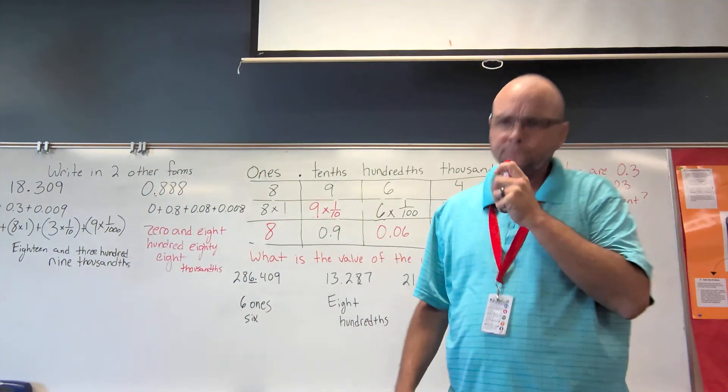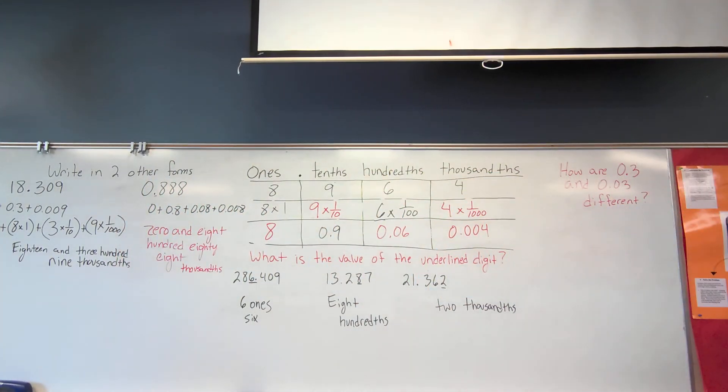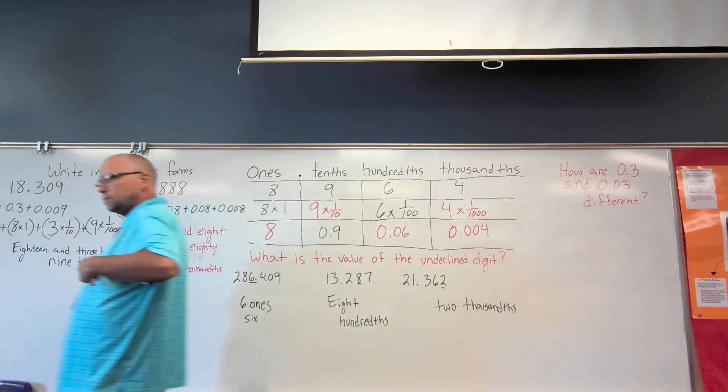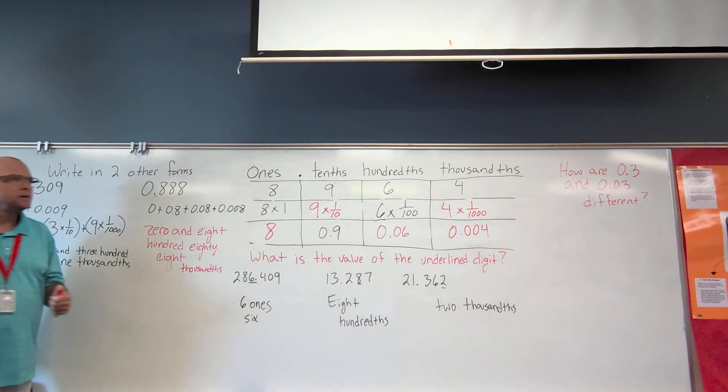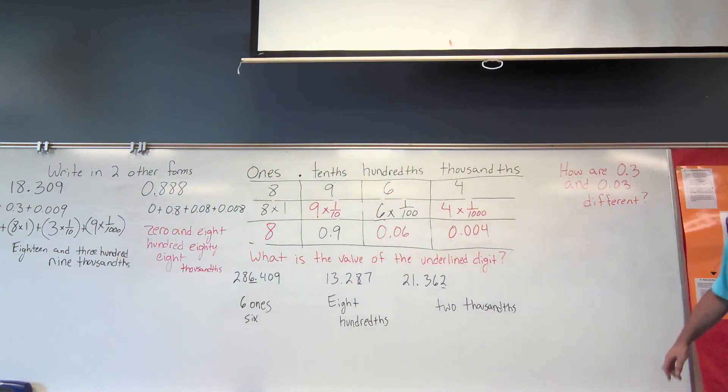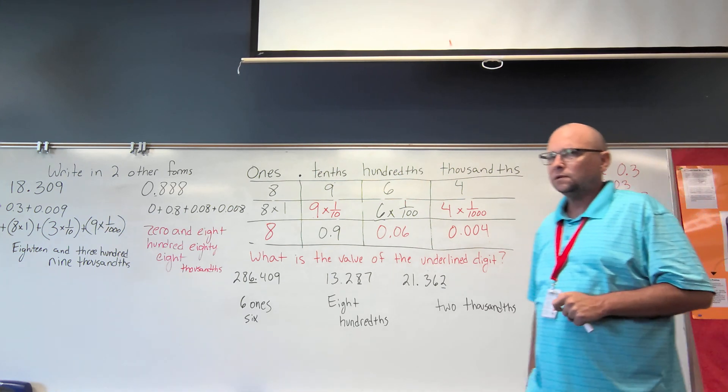Ava, how are three tenths and three hundredths different? Let me ask you this, Ava, which one's bigger? Three tenths is bigger. If you can think of this partly as money, because DJ told me like three tenths would be like three dimes, which is 30 cents, and three hundredths would be like three pennies, which is three cents. So three tenths is going to be bigger.